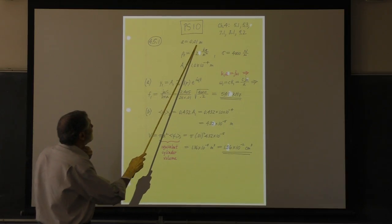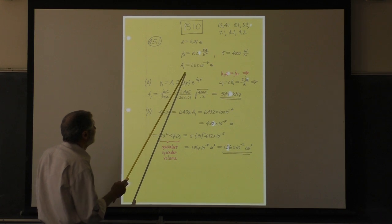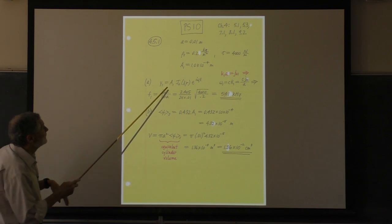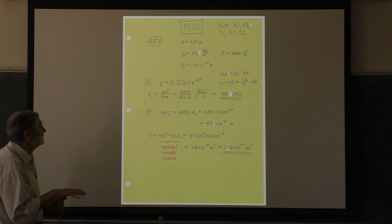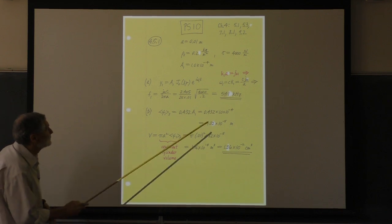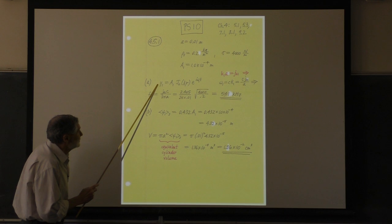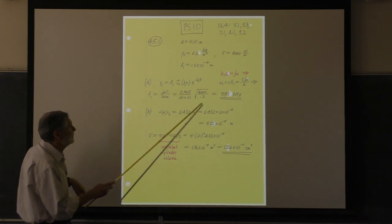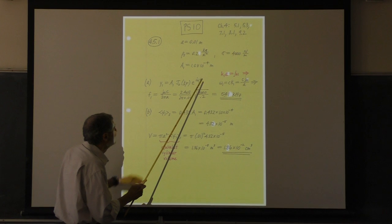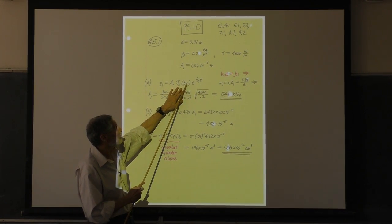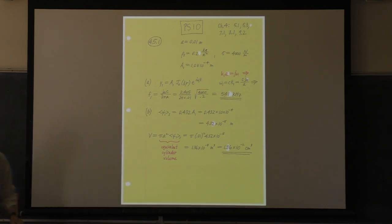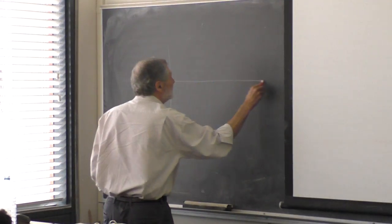Here's what we're given: the radius, mass per unit area, tension per unit length, and the peak maximum amplitude of the fundamental. This is the azimuthally symmetric mode — the first mode. The displacement is given by a Bessel function; there's no theta dependence. These are the M equals zero modes. We're looking at the fundamental, and it's specified by the boundary condition: we have to have the displacement go to zero at R equal to A.